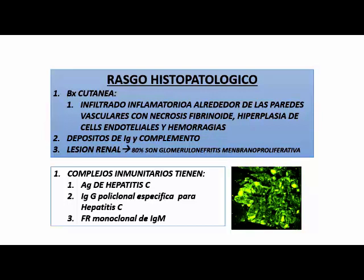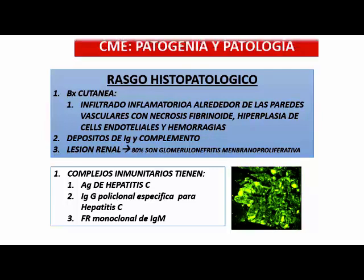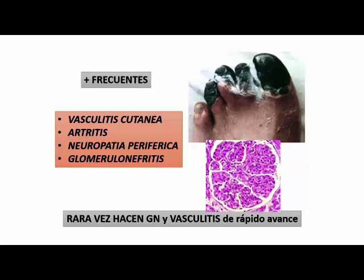En el contexto de lo que puede ser una historia clínica, un paciente con crioglobulinemia por lo general va a estar asociado a hepatitis C. Pacientes con esta característica: vasculitis cutánea, necrosis distal de pies y dedos, artritis, neuropatía y glomerulonefritis. Es muy frecuente que estos pacientes hagan una vasculitis distal con necrosis de dedos o de pulpejos, por precipitación de crioglobulinas que trombosan y obturan los pequeños vasos.